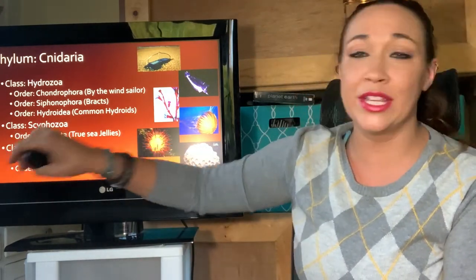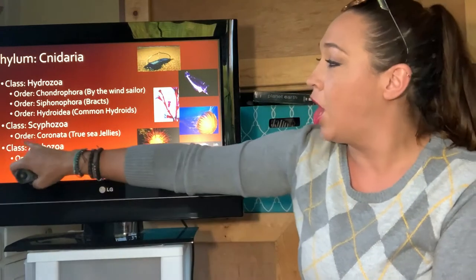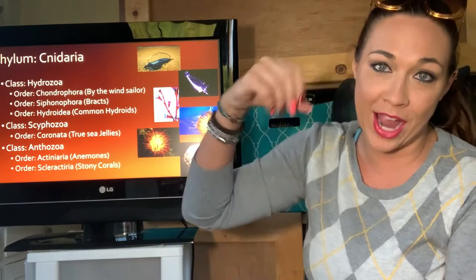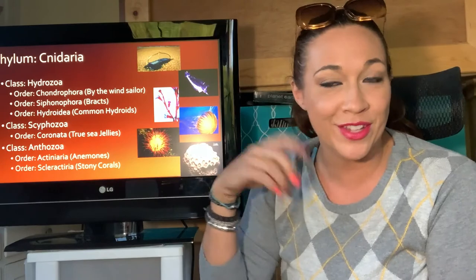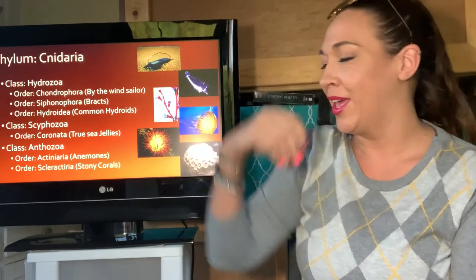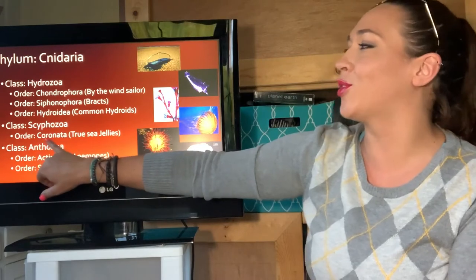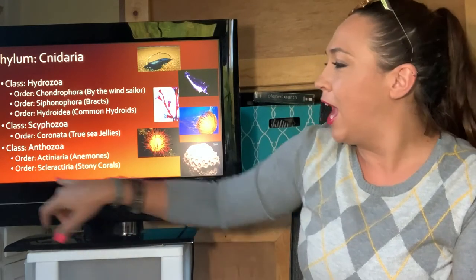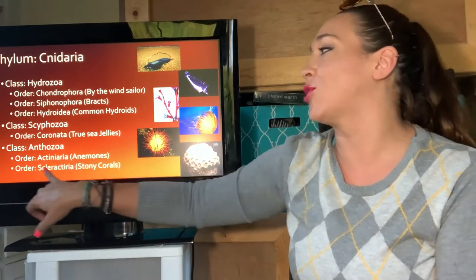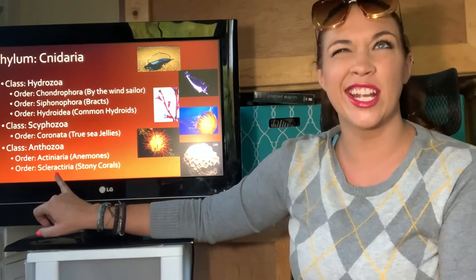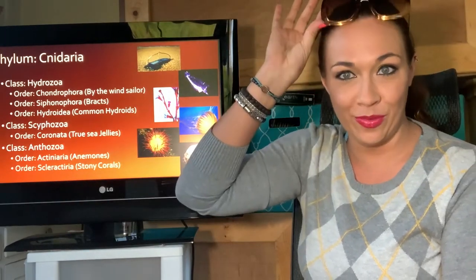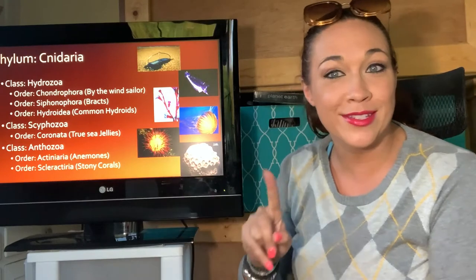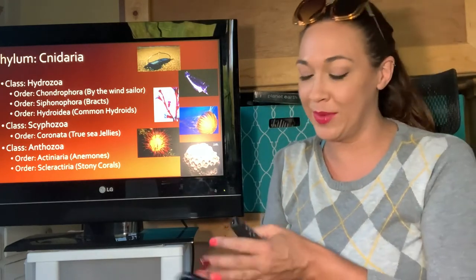Next up is the class Scyphozoa — these are your true sea jellies. Under the order Coronata you get your true sea jelly; notice I'm not saying jellyfish because it's not a fish — it's a sea jelly. Finally, we have class Anthozoa: order Actinaria, which are your anemones, and order Scleractinia, which are your stony corals. Stony corals get mistaken for sponges a lot, so make sure you make that distinction.